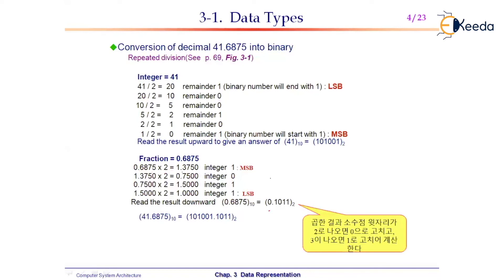For example, starting with 0.375: multiply by 2 to get 0.750. The digit before the decimal point is 0 — that becomes part of the answer. Then take 0.750 and multiply by 2 again.